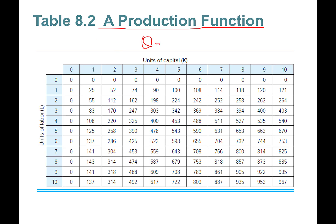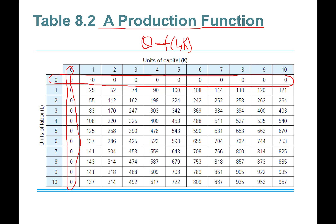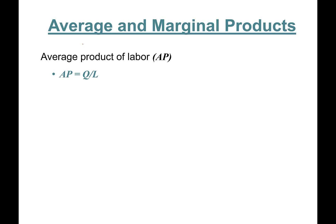Here is a short-run production schedule. When you put in different combinations of labor and capital you get this table. For example, if you hire zero capital, regardless of the number of workers, you produce zero. If you have zero labor, regardless of how much capital, you produce zero. With one unit of capital, one worker produces 25, two workers produce 55, three workers produce 83, and so on.